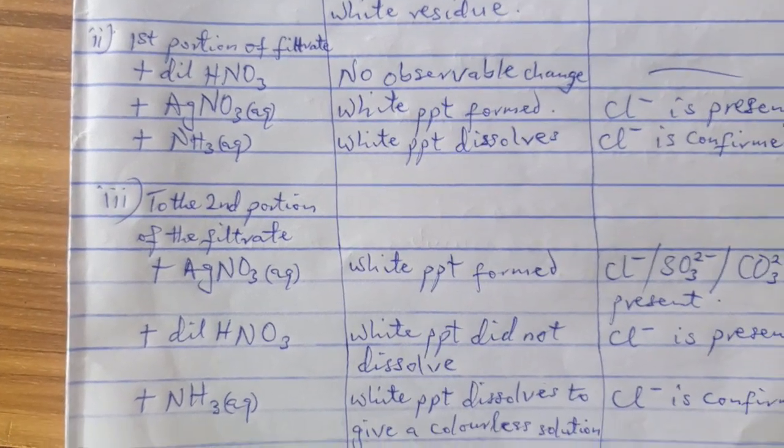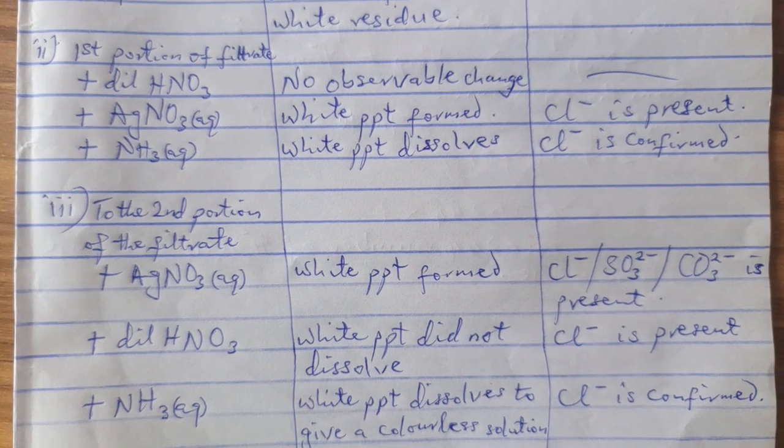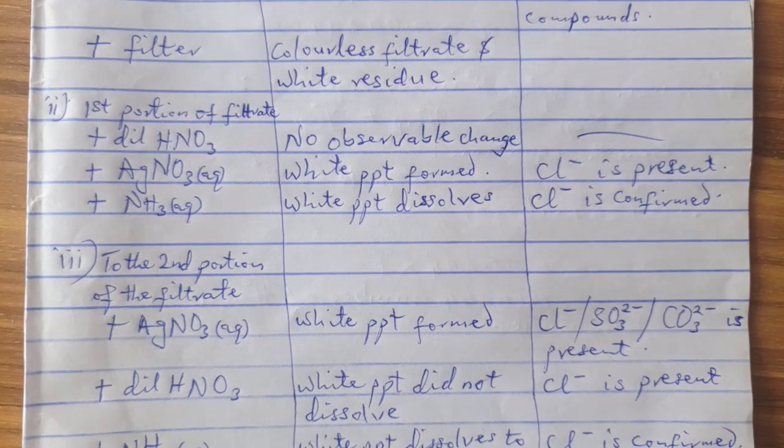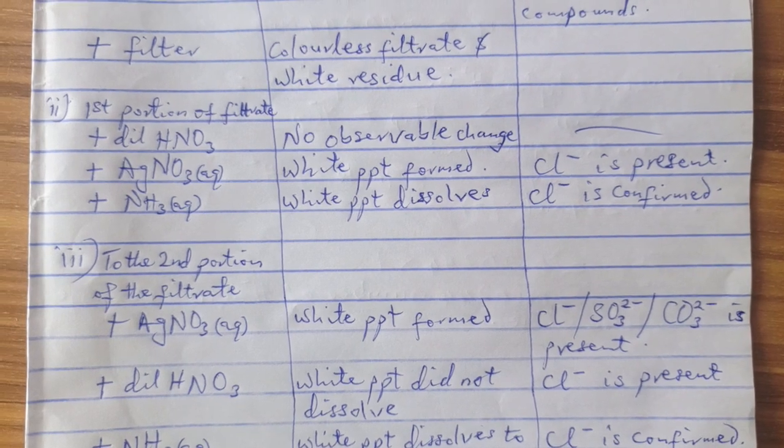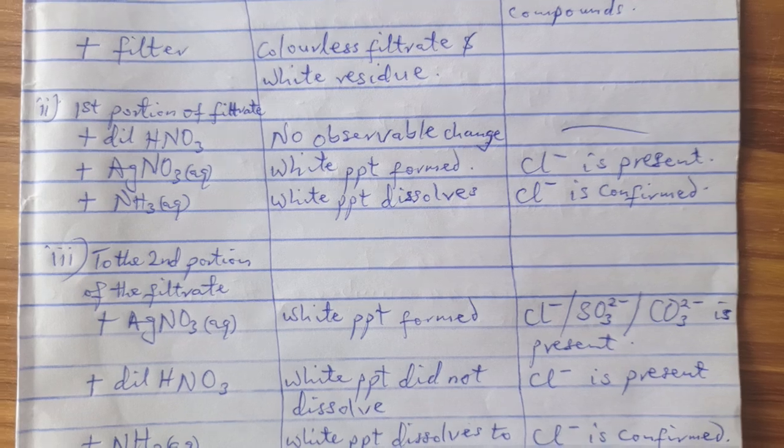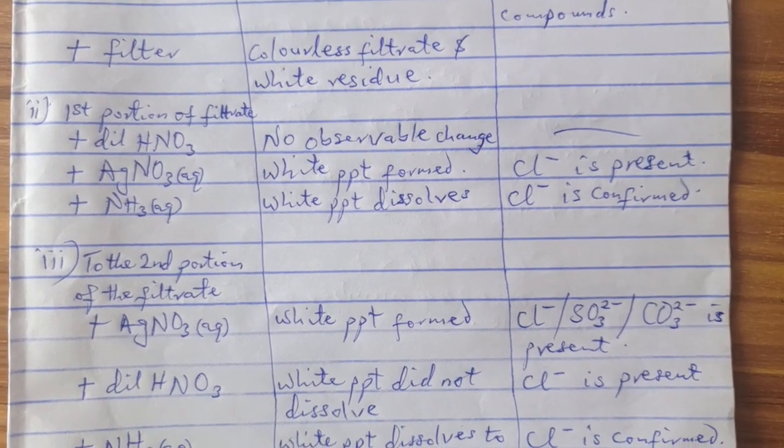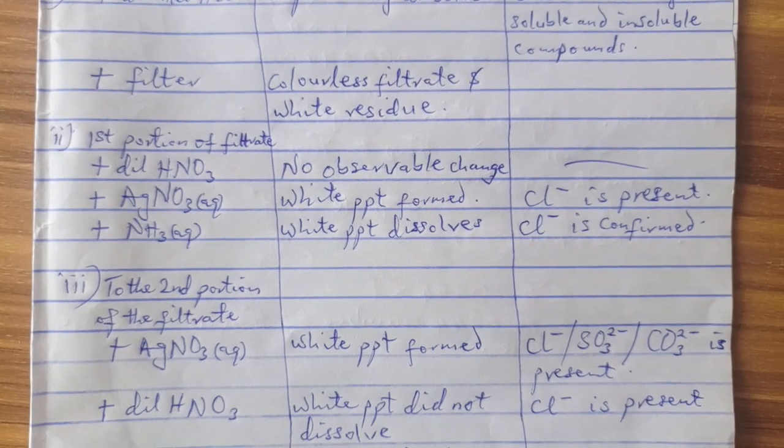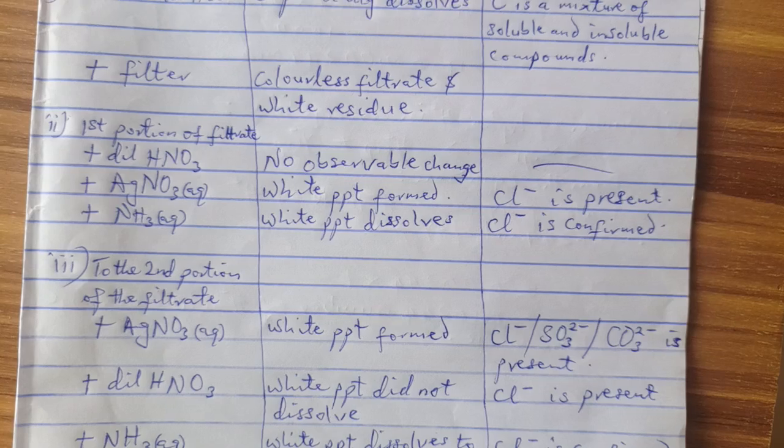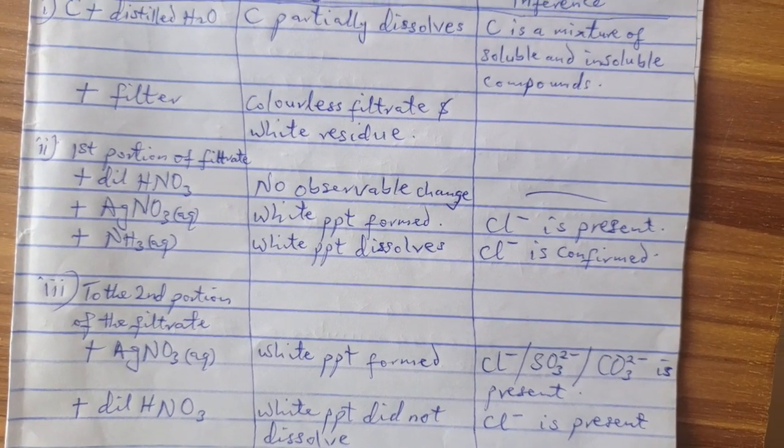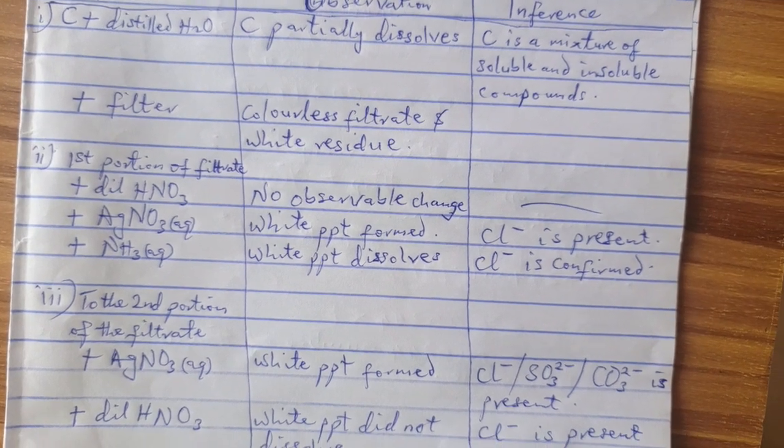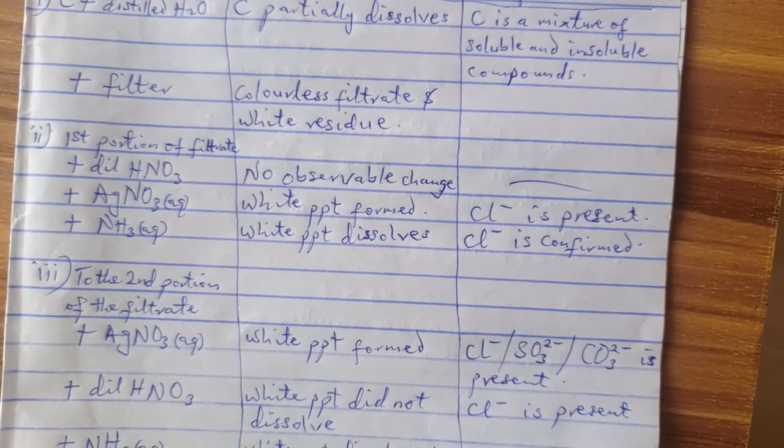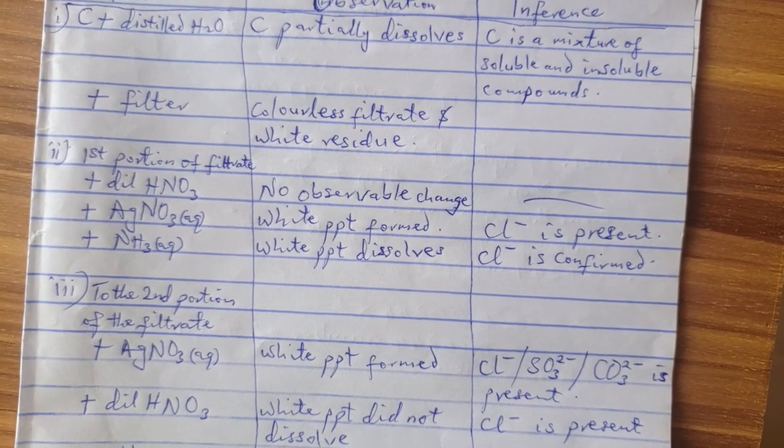Now let's go to the second portion, III now. They said you should add AgNO3 aqueous to it. Once you add that, you will see white ppt formed. But in the previous one, there was no observable change when you added HNO3 first. But here you are adding AgNO3 first and you observe that white ppt formed. More than Cl- is expected to be there. You should be suspecting three different ions when you start with AgNO3. When we started with HNO3, we suspected only Cl- during the time we added AgNO3. But now that we have started first with AgNO3, we are suspecting three ions.